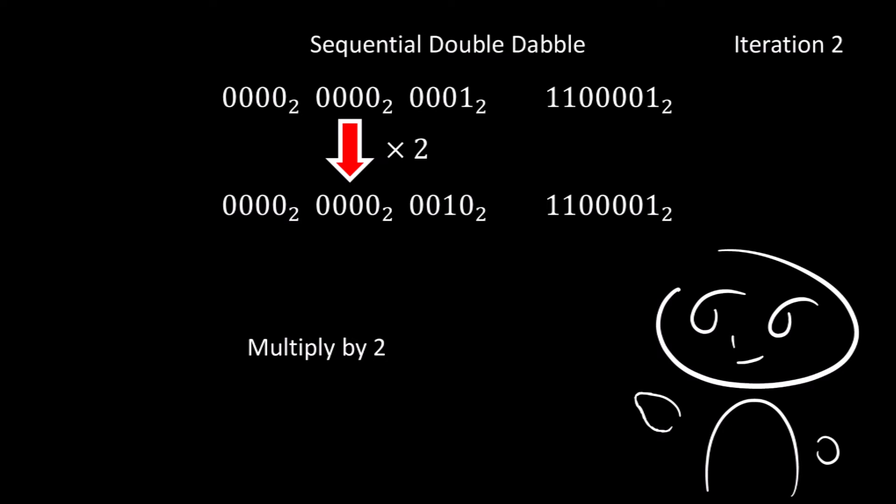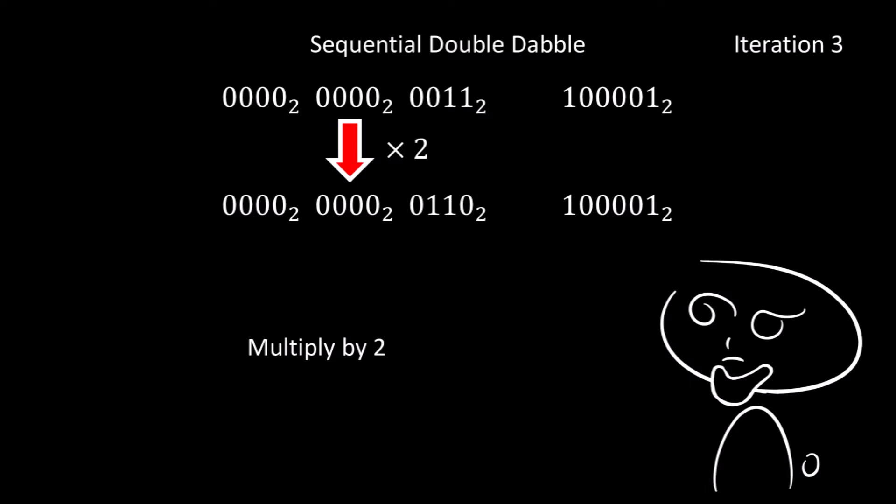For the second iteration, we start by multiplying by 2. So 1 multiplied by 2 gives us 2. Then we shift in the topmost bit from our input. This happens to be a 1, so the 2 becomes a 3. For the third iteration, we multiply 3 by 2, and that gives us 6. Then we shift in a bit from the input. Again, this happens to be a 1, so the 6 becomes a 7.